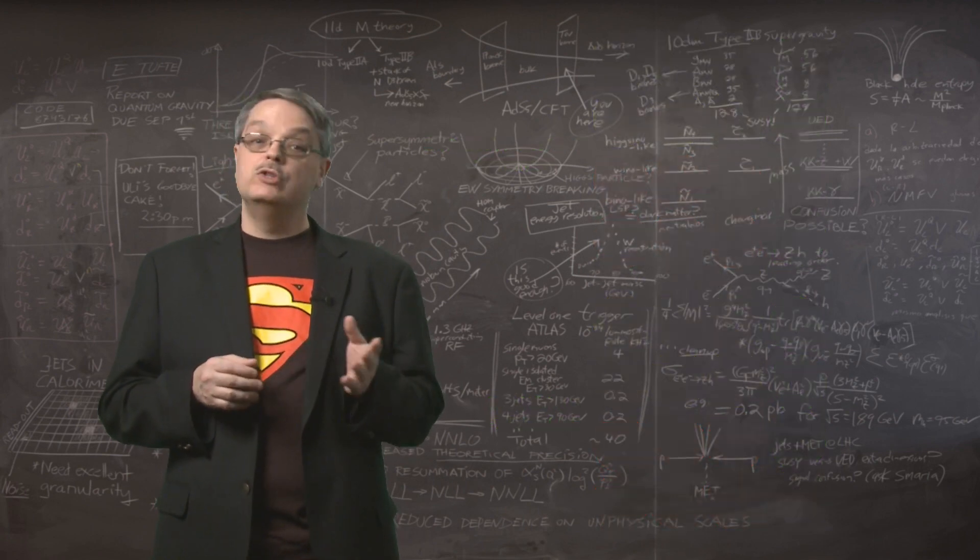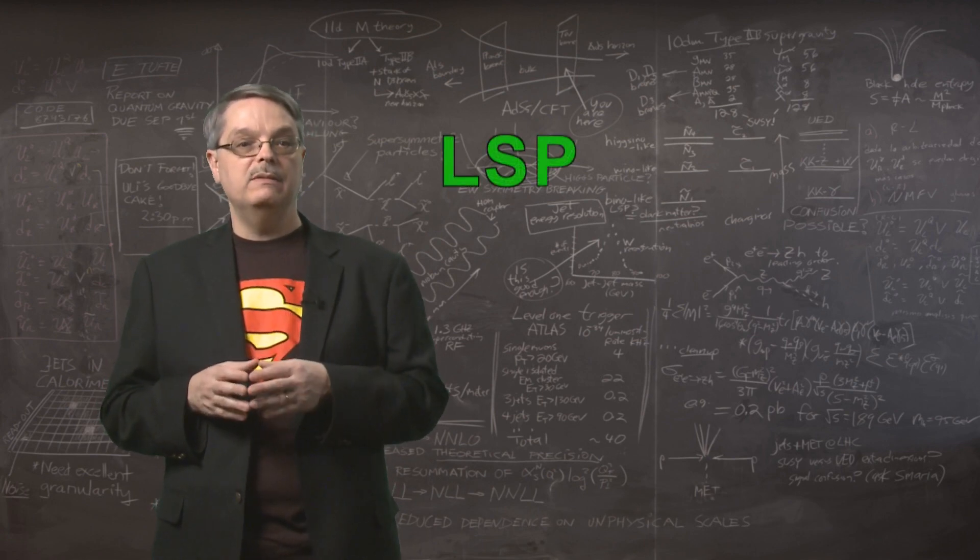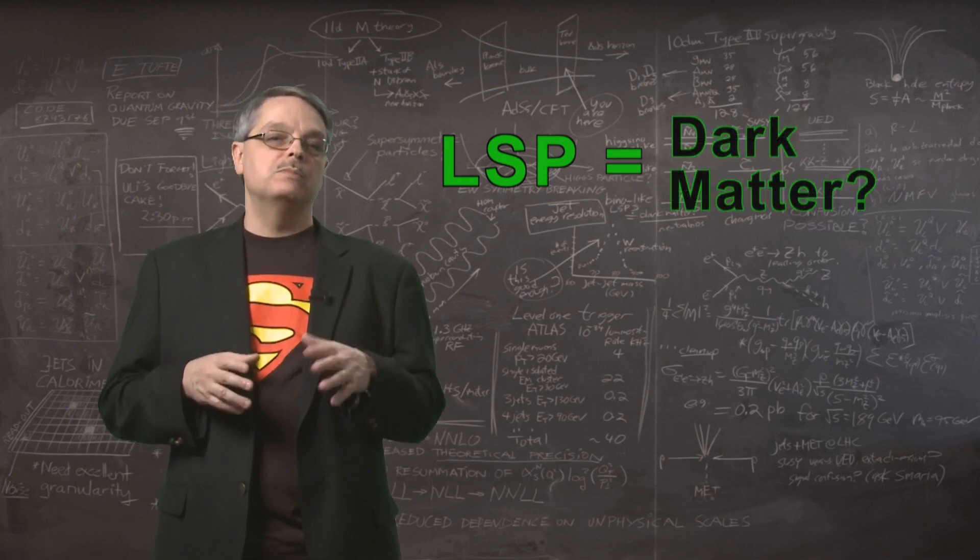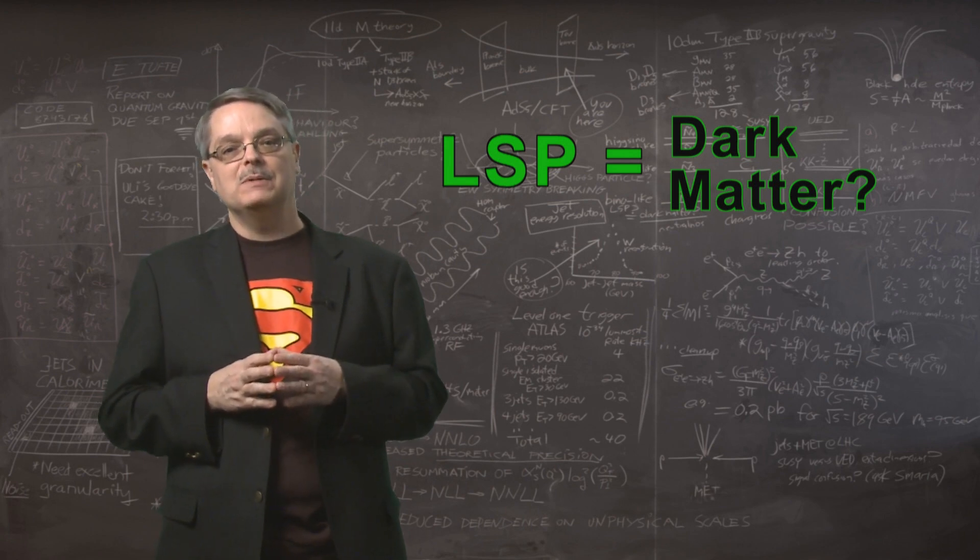The lightest of these supersymmetric cousins, called the lightest supersymmetric particle, or LSP, has exactly the right properties to be the missing dark matter particle. Thus, if supersymmetry is right, we can solve both cosmic as well as subatomic mysteries.